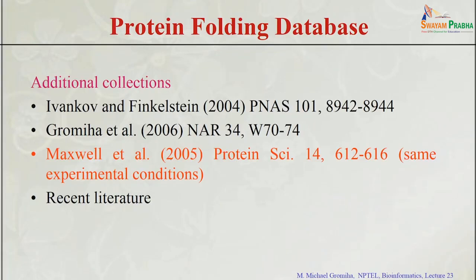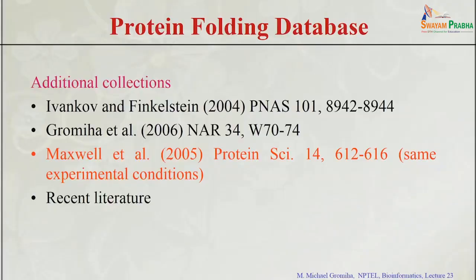To get the data, we can use various literature sources or other databases. For example, the Folding Rates database — which deals with mutants to get the folding rate upon mutation — is available on our website as a server-cum-database, where you can download data for further analysis. For protein folding rate data, in 2005 Maxwell and colleagues formed a consortium to measure folding rates under the same experimental conditions — same temperature, pH, and concentrations. Currently there are several reviews discussing folding rates of proteins, and we know the folding rates of more than 100 proteins.